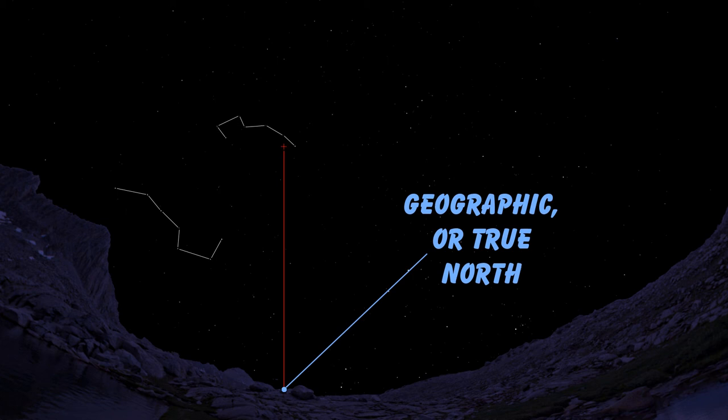Now bear in mind this is not usually where your compass will point, as compasses use the magnetic field of the Earth's iron core, and magnetic north is not the same as true north. I have a video on that subject and I'll put a link to that in the description below. But now you know how to find true north the same way our ancient ancestors did, by using nothing more than their eyes and a keen understanding of the night sky.